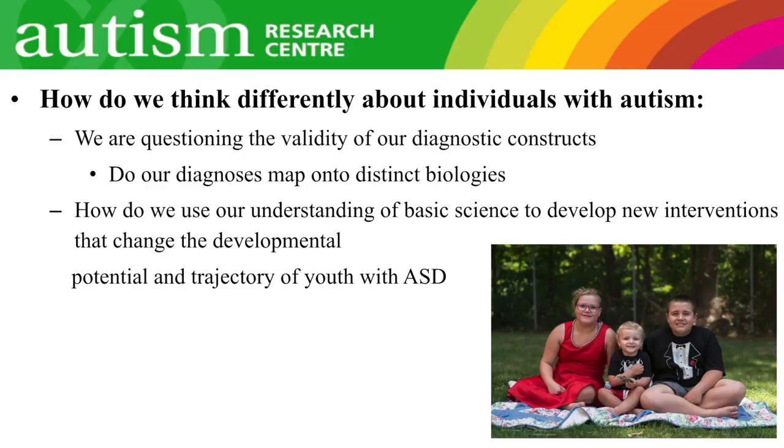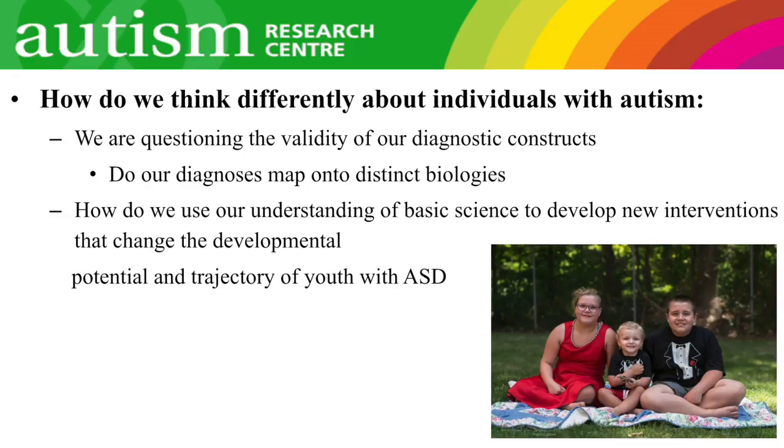I'll show you research examples where we have tried to challenge ourselves to think about these biological differences as producing risk for any neurodevelopmental disorder. The second place I want to take you tonight is how we're changing the way we think about treatment, with examples from medication research, early intervention, and technology development. This is Liam, Phoenix, and Gaia — their mom is in the audience. Phoenix and Liam have autism spectrum disorder, and Gaia has ADHD and a learning disability and is gifted. They all share the same genetic makeup.